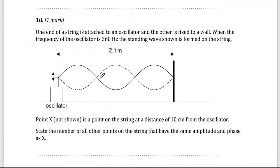Now we have a standing wave. One end of a string is attached to an oscillator and the other is fixed to a wall. When the frequency of the oscillator, I'm going to call this one F1, 360 hertz, the standing wave on the string is shown. Actually, this is F3, because here I have three anti-nodes. The length here is 2.1. If this is 2.1, the length between two nodes will be 2.1 divided by 3, so this one is around 0.7 meter.